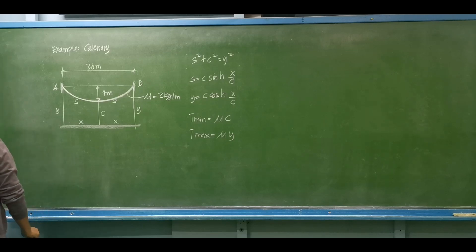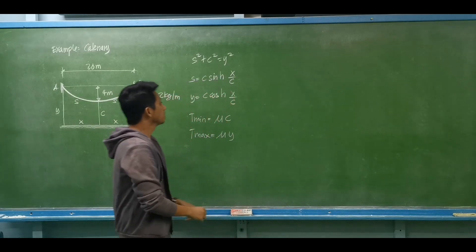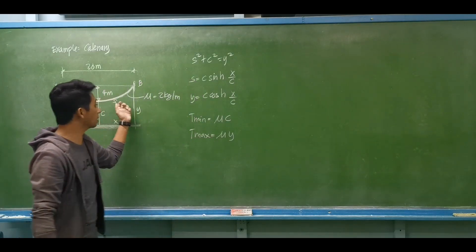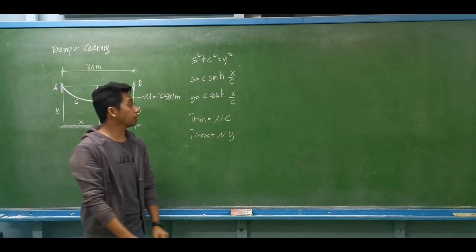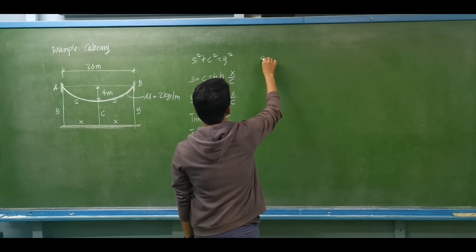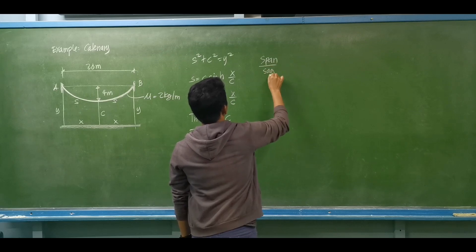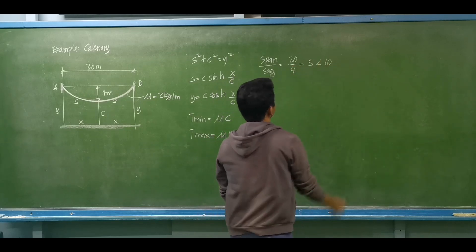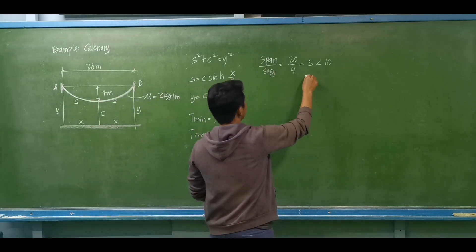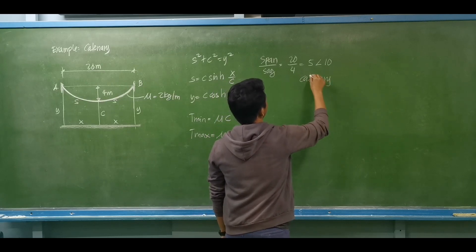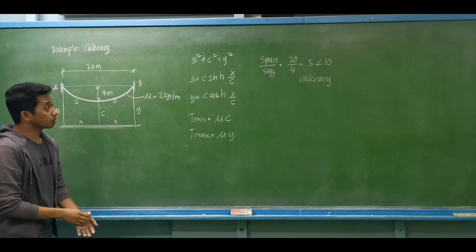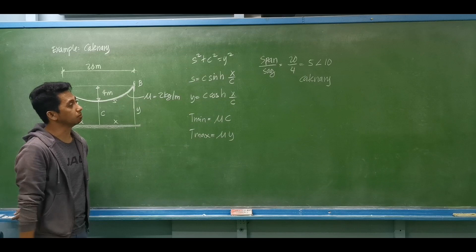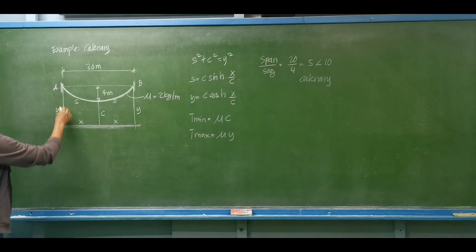Now let us proceed to catenary cables. How do we determine whether a cable is catenary or parabolic? If the cable carries only its own self-weight, it is analyzed as a catenary. Additionally, if the ratio of span over sag is less than 10 — for example, a span of 20 meters and sag of 4 meters gives a ratio of 5, which is less than 10 — that will be analyzed as a catenary cable. If the span-to-sag ratio is greater than 10 and it carries a horizontal uniform load, it is analyzed as parabolic.